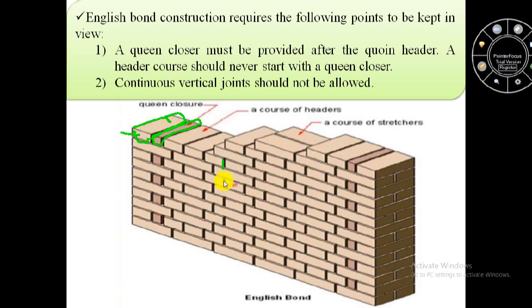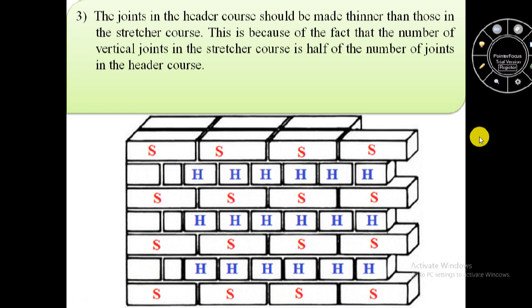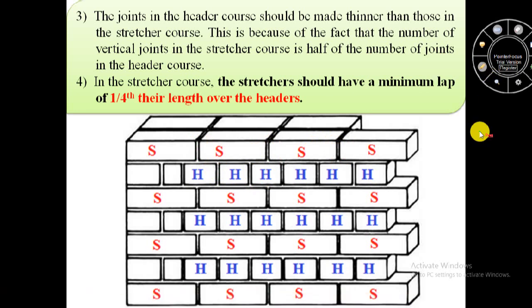In English bond the vertical joints should not be continuous; these joints are discontinuous. The joints in the header course should be made thinner than those in the stretcher course, because the number of vertical joints in the stretcher course is half of the number of joints in the header course. In the stretcher course, the stretcher should have a minimum lap of one-fourth of their length over the headers.